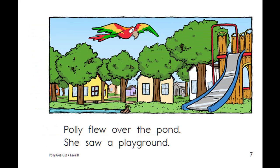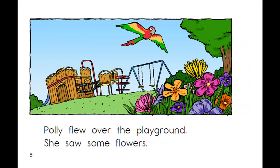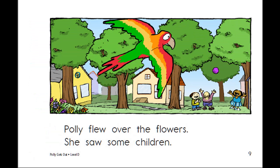Polly flew over the pond. She saw a playground. Polly flew over the playground. She saw some flowers. Polly flew over the flowers. She saw some children.